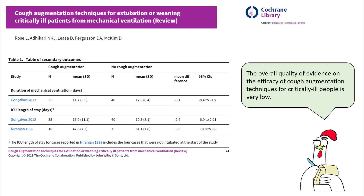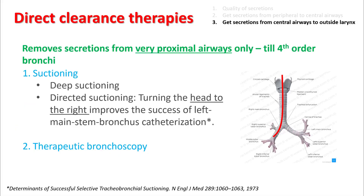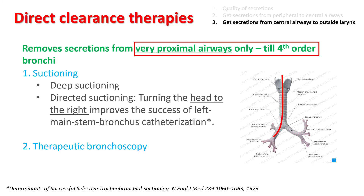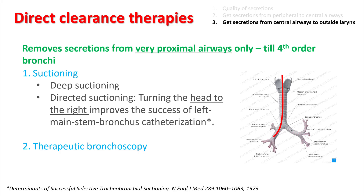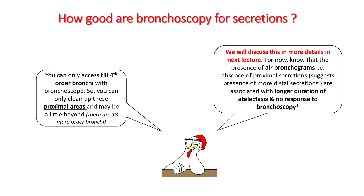The overall quality of evidence on efficacy of cough augmentation technique for critically ill patients is very low, and there are only two studies in this area with small numbers of patients. Next is direct clearance therapies: either suctioning or therapeutic bronchoscopy. Understand that these methods remove secretions from very proximal airways only — possibly to the 4th-order bronchi. Since there is a higher tendency for your suction catheter to go into the right mainstem because it is straighter and larger, you can turn the head to the right, which can improve success of left mainstem bronchus catheterization.